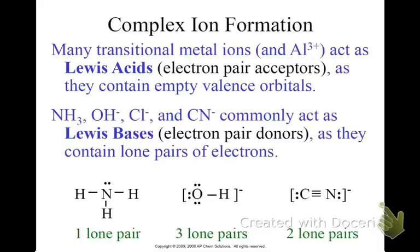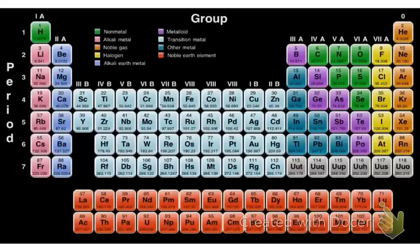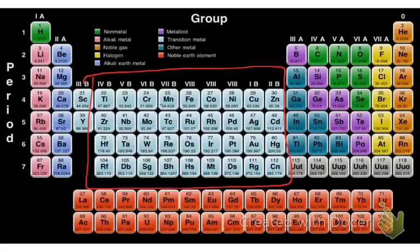Many transition metal ions, such as aluminum — transition metals are the ones in the middle of the periodic table — will form ions, and they always form cations with variable charges. Those cations, if you end up with a high enough reagent level, you end up forming these complex ions.